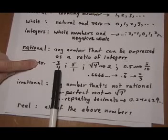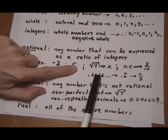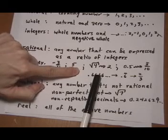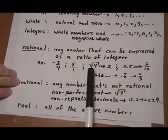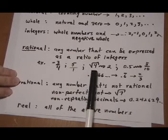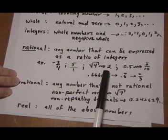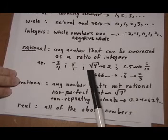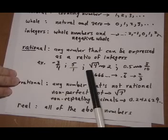For example, minus three-fourths — that is a ratio of integers, it's a rational number. The number five, if it wasn't written as a fraction, well, you can always write a number as over one. So five would be a rational number. Root four — any root that's a perfect square — root four equals two, which is a rational number because two is the same as two over one. If you have a non-perfect root, such as root seven, that is not a rational number because you cannot write its result as a fraction.